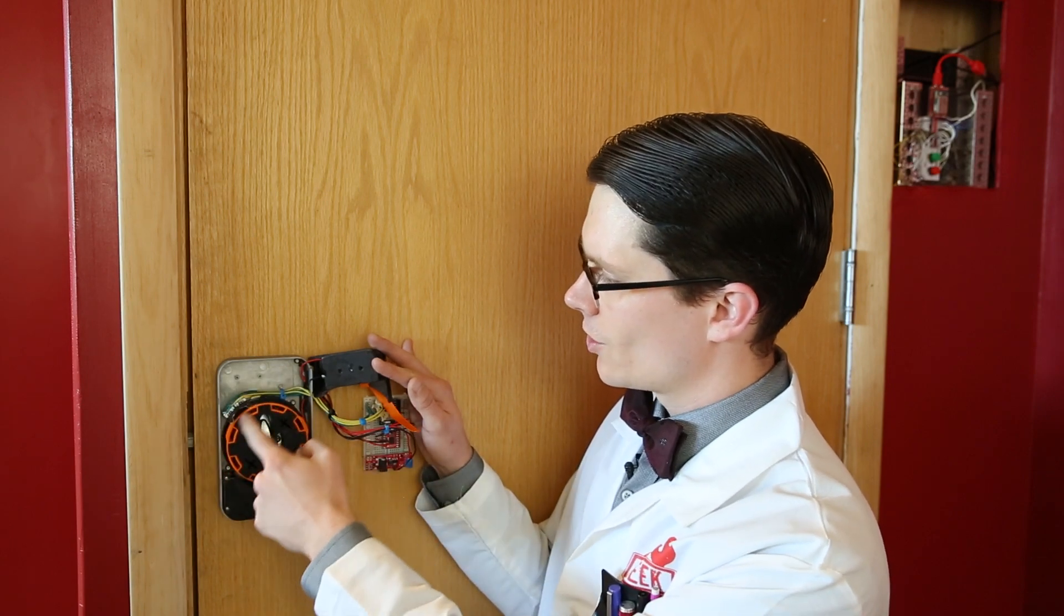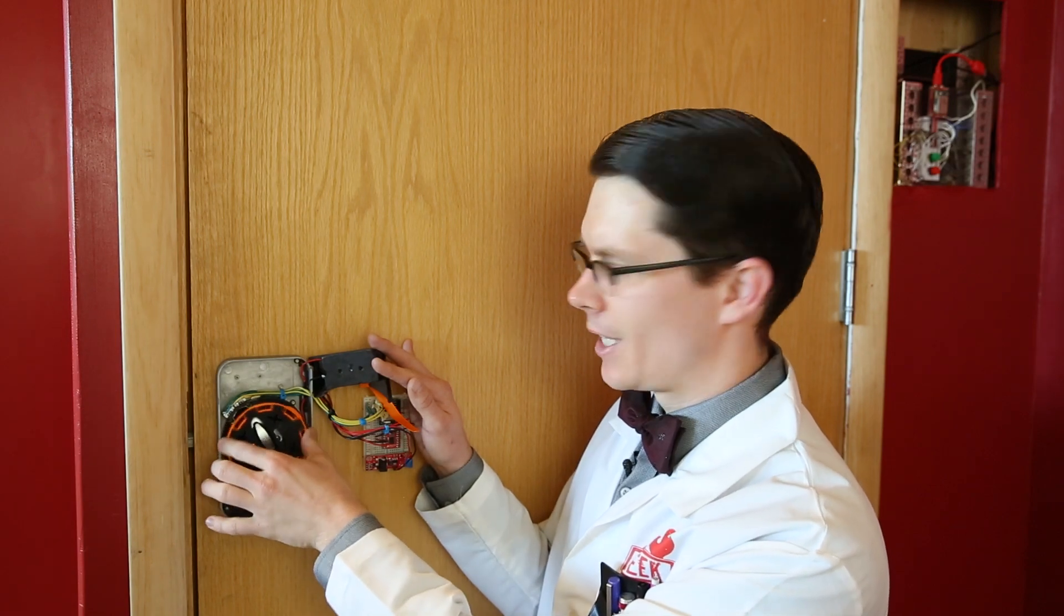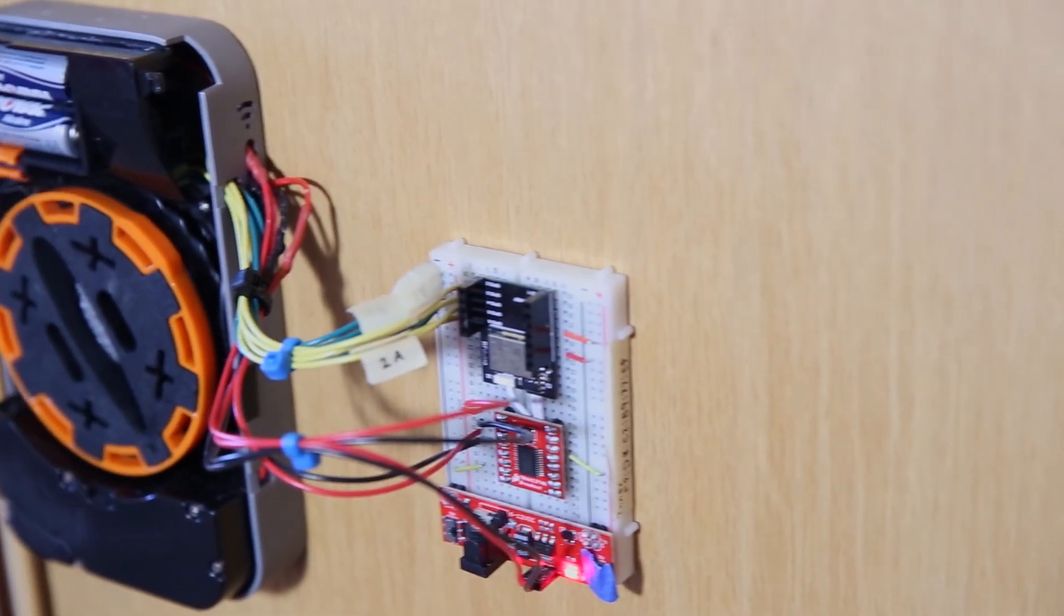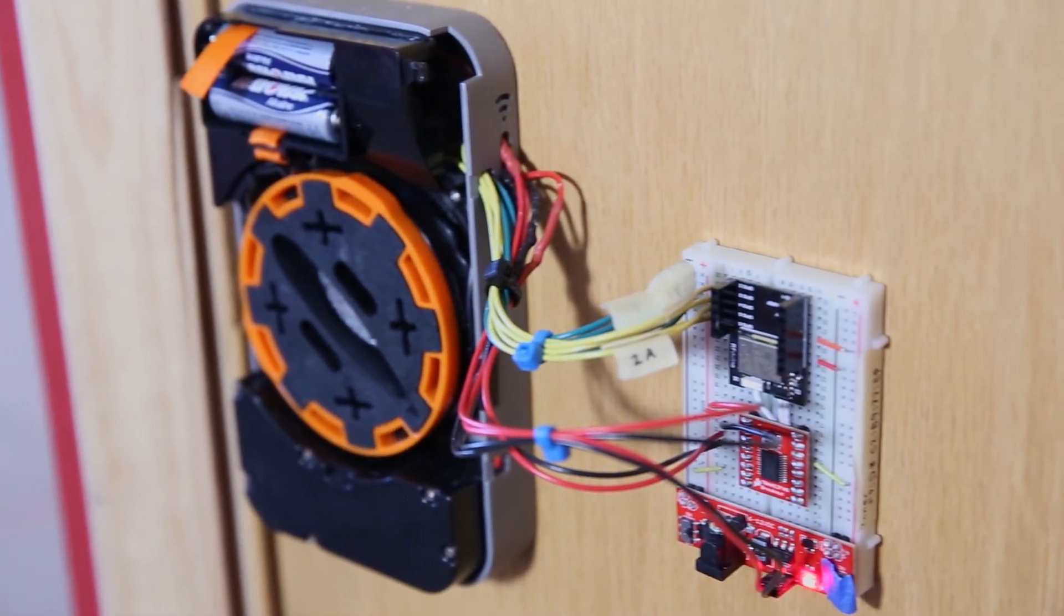There's ridges along this circle that the limit switches can look for, and as those get pushed, you get an idea of which state the Lock-O-Tron is in.